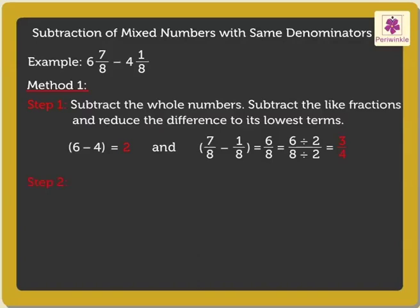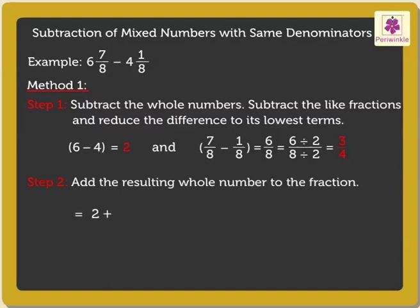Step 2: Add the resulting whole number to the fraction. Thus, we add 2 plus 3 upon 4, which equals 2 and 3 upon 4.